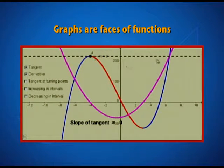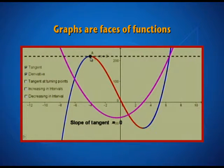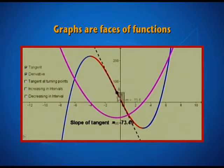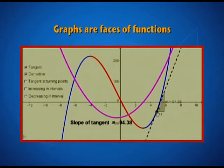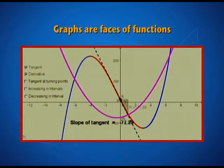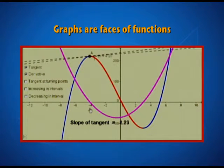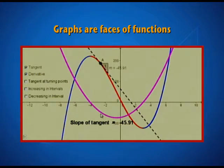It may take a maximum value somewhere else beyond this point as well, but in this neighbourhood of point A, corresponding to x equal to minus 4, this value of the function is the highest — that is the point of maxima. Similarly, as the function comes sloping down, it hits a minimum value and then starts rising up. These are the points addressed as the points of local maxima and local minima, because in a certain neighbourhood they behave like the point of maximum value or the point of minimum value.